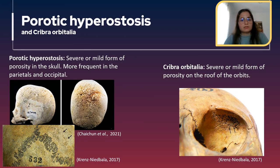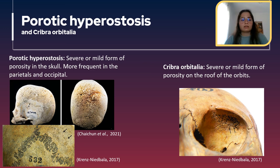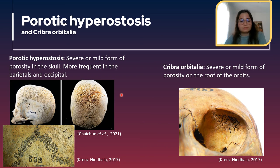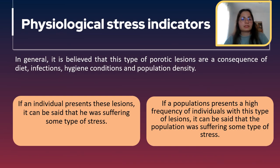Two of these stress indicators visible in the skeleton are porotic hyperostosis and cribra orbitalia. They are both forms of severe or mild porosity, but porotic hyperostosis is in the skull and cribra orbitalia is in the roof of the orbits. Here you have a skull of an adult showing a severe case of porotic hyperostosis, and this skull here shows a mild case. In here you can see the cribra orbitalia. In general, it is believed that this type of porotic lesion is a consequence of diet, infections, hygiene conditions, and population density.